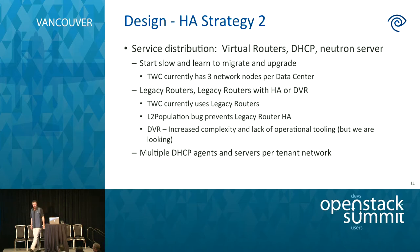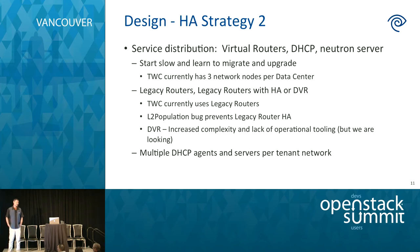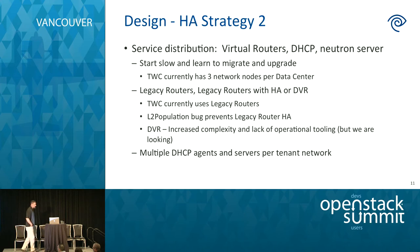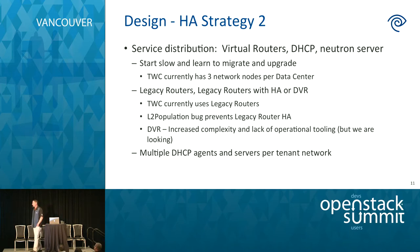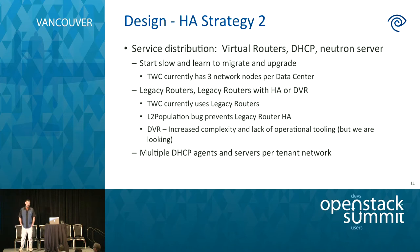One big thing I can caution you on up front is service distribution — how you're going to implement your virtual routers, make tenant DHCP HA, and how you're going to lay out your Neutron server. I'd suggest starting slow and learning to migrate to increasingly better processes. We currently have three network nodes per data center and are about at the point where we need to break that up more fine-grain. Because our CI/CD processes are pretty good, we have the ability to do that with almost no outage.